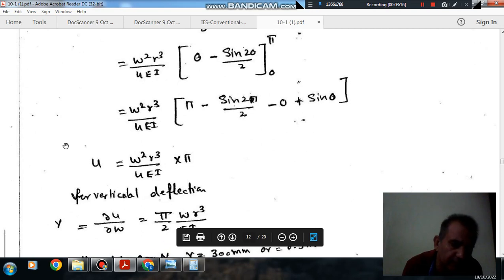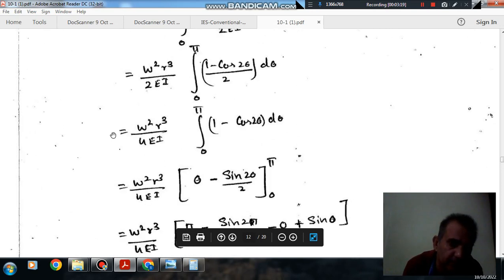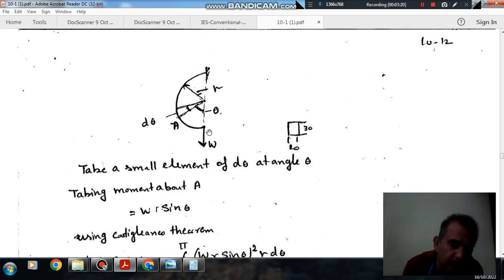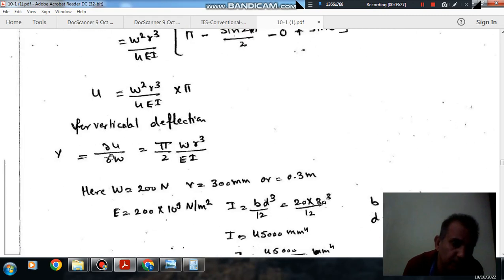According to Castigliano's theorem, if we want to find out deflection at any point, then we have to differentiate the energy with respect to the load acting at that point. So differentiating this energy with respect to W, it will be pi by 2 WR cube by EI.